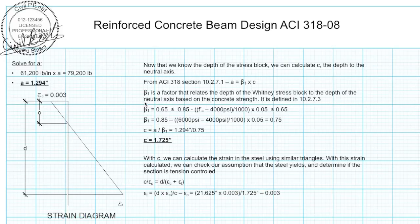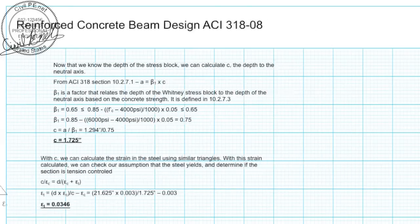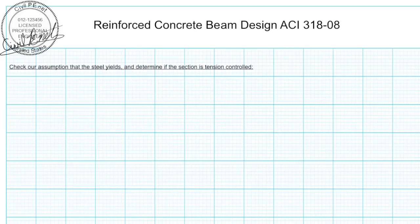Now we substitute everything we know and we come out with a strain in our steel equal to 0.0346. Some people say inches per inch for units, but it basically comes out to no units. So what does that tell us?